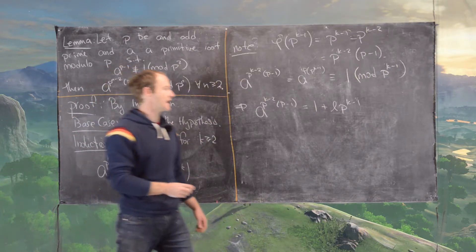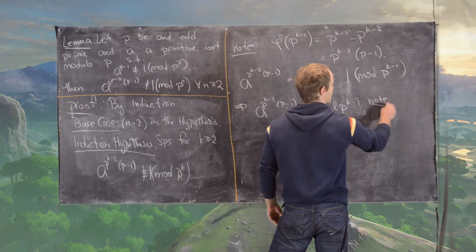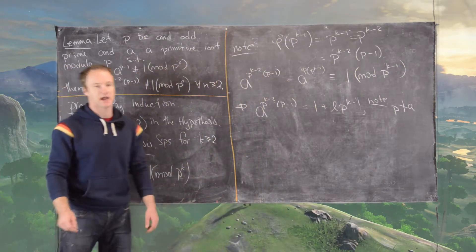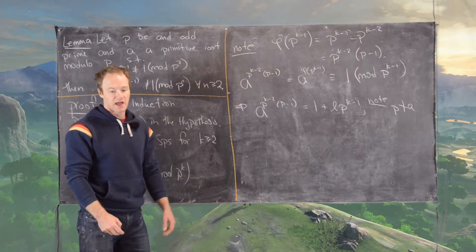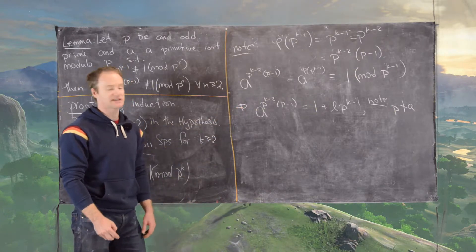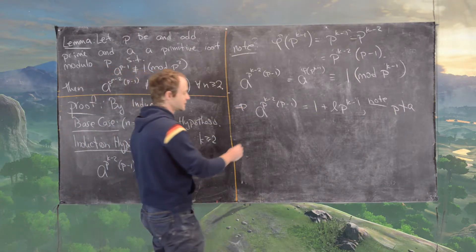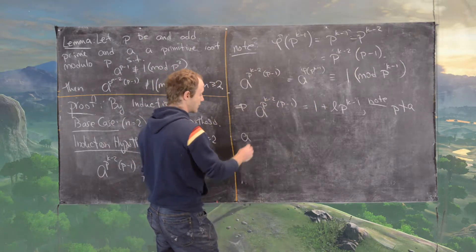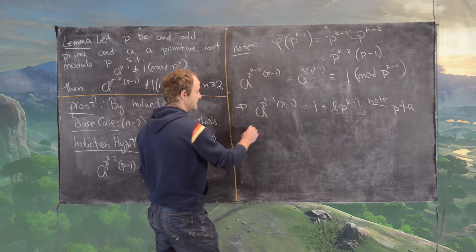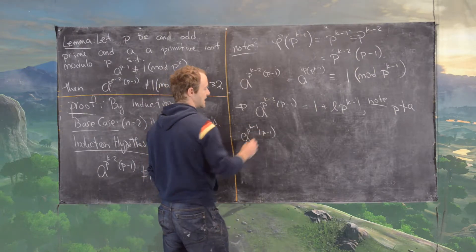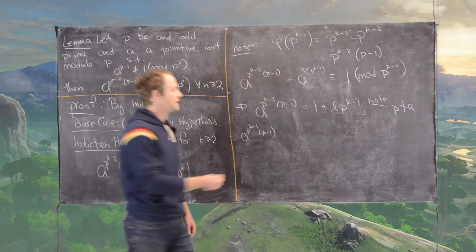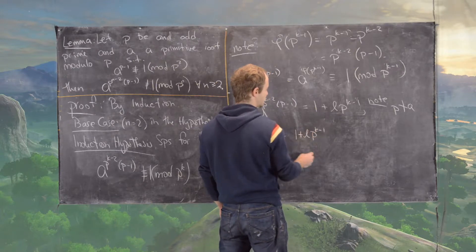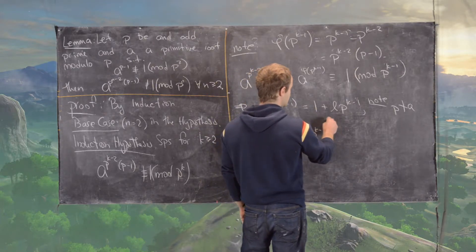Notice that p cannot divide a, otherwise a is not a primitive root modulo p. The next thing we want to do is raise each side of this to the pth power and see what we get. So if we take a to the p to the k minus 2 to the pth power, we're going to get a to the p to the k minus 1 times p minus 1. And so this is going to be equal to 1 plus l times p to the k minus 1, all to the pth power.